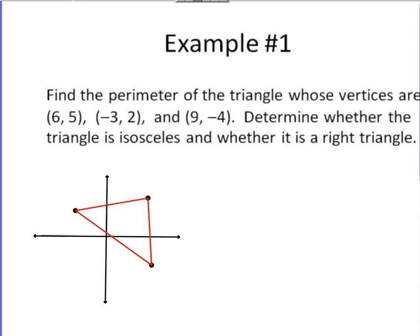All right, so as this problem's set up, the sketch is optional, but say I label my given points. Ordered pair (6, 5), I'll let that be A. Ordered pair (-3, 2), I'll let that be B, and then (9, -4), I'll let that be C.